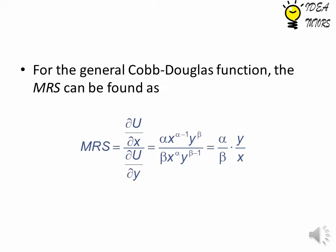The MRS is alpha over beta times y over x. This is calculated by dividing the partial derivative of the utility function with respect to x by the partial derivative with respect to y.